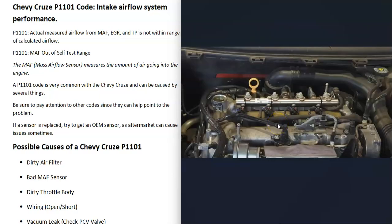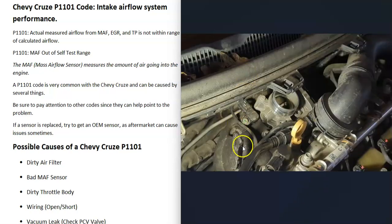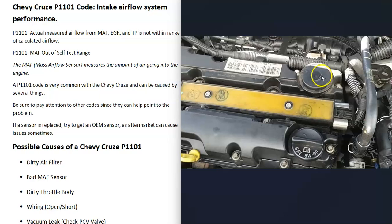The next possible cause is a vacuum leak or intake air leak, meaning air is getting into the engine and bypassing the throttle body. If there's a leak from a bad hose, bad gasket, or bad PCV valve, it's going to throw everything off. A very common problem on Chevy Cruzes is the PCV valve — its location can vary by year; on a 2012 Chevy Cruze, it's located right here. When these fail, they often make a loud hissing noise.